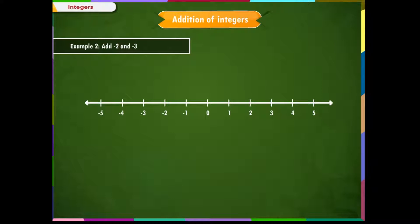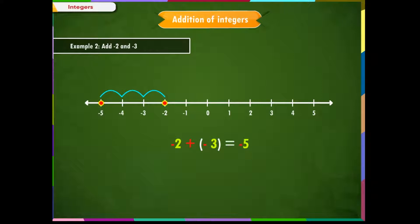Example 2: Add minus 2 and minus 3. We write this problem as minus 2 plus (minus 3). Since we cannot write two signs one after the other, we put a bracket. Using the number line, we first mark the first integer, that is minus 2. Since we are adding a negative integer, that is minus 3, as per our rule, we need to move three steps towards left. We reach at minus 5.